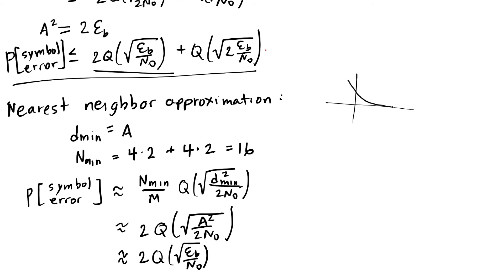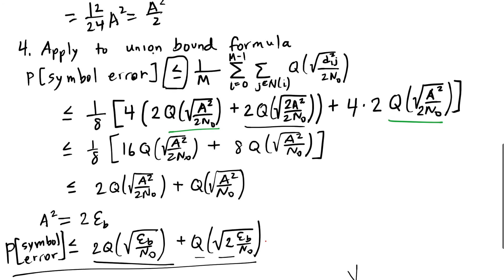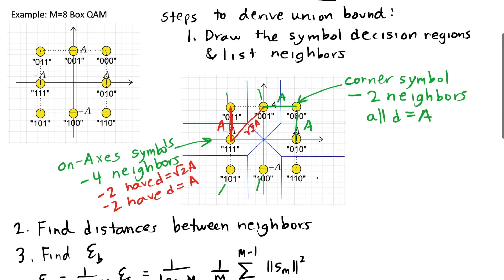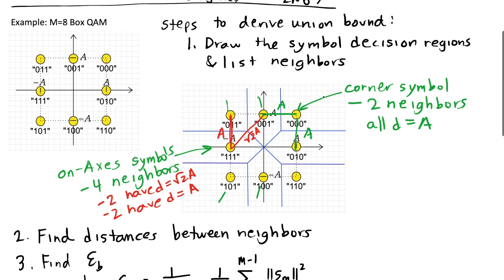Remember it goes to zero very, very quickly and putting in a value that square root of 2 times whatever the argument was is going to make that Q function value much smaller. And so this is going to be a pretty good approximation, especially for the low probability of error case when we're out on the tail of this Q function. So either way, you're getting the picture of how we calculate the nearest neighbor approximation, how we calculate the union bound, and how we do that using the constellation that we're given.